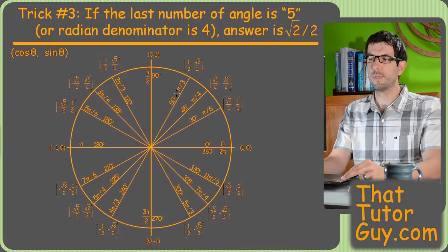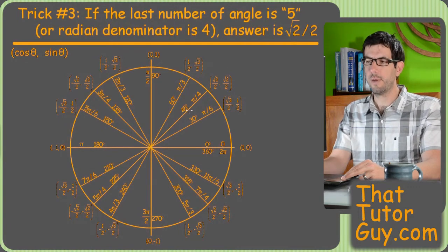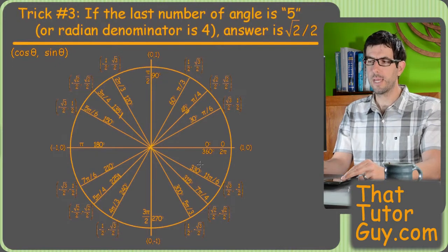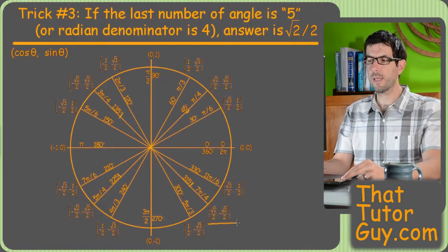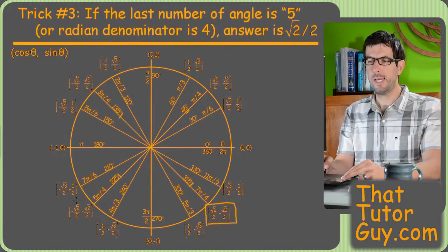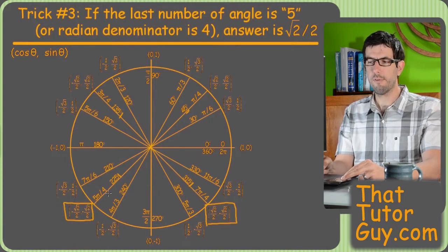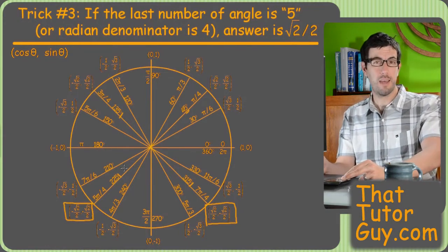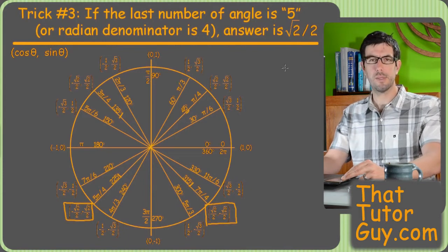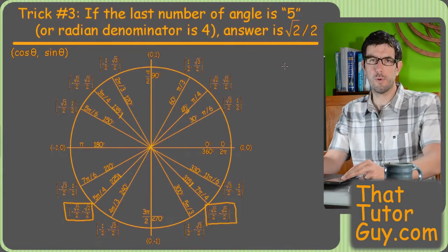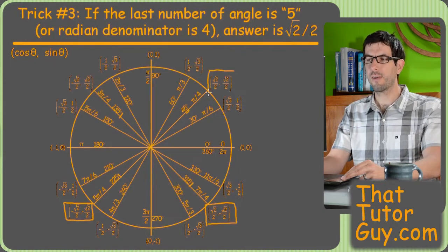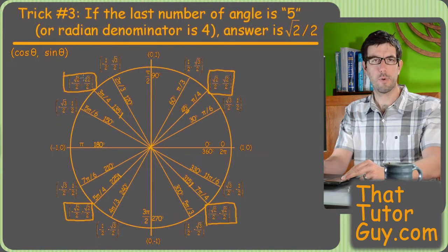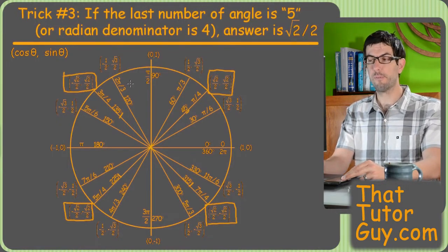Alright, this is a big trick that no one seems to notice until I point it out, but if the last number in the angle, you know, in the degree angle is five, then both sine and cosine are square root of two over two. And that's because if you have a five as the last digit, that means your reference angle must be 45, but of course 45 degrees has both a sine and cosine square root of two over two. So that means that your sine and cosine of any angle that ends in a five is going to be either plus or minus square root of two over two. That's super helpful information, obviously.